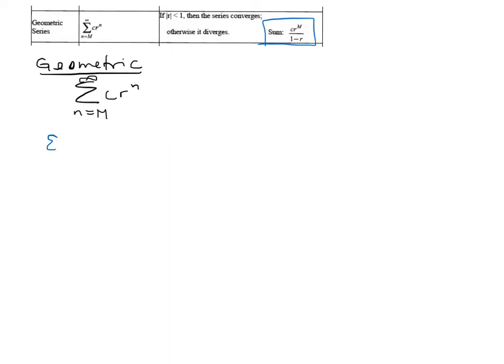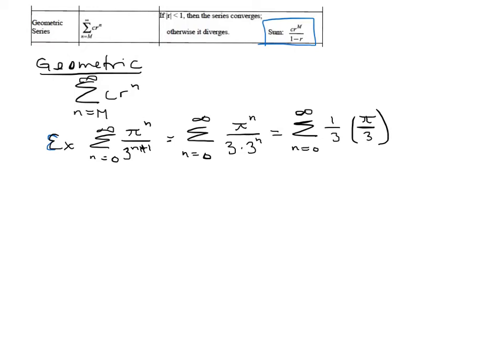Let's look at the sum from N equals zero to infinity of pi to the N all over three to the N plus one. Now at first, this one doesn't look like a geometric series, but I can use exponent rules with that three in the denominator and make this, I'm going to keep pi to the N in the numerator, and then in the denominator would be three times three raised to the N.